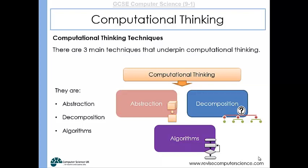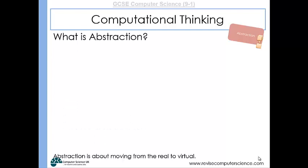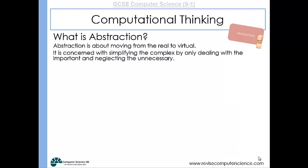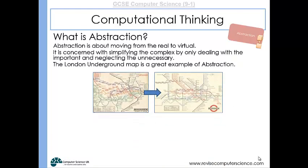So abstraction. What is abstraction? Well, this is about moving from the real world into the virtual world. And by doing that, we are simplifying the complex and only dealing with the important when neglecting the unnecessary. And a really good example of abstraction is the London underground map.